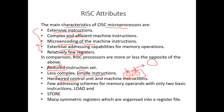RISC uses a hardware control unit, machine instructions with few addressing schemes for memory operands, with only two basic instructions for memory access: load and store. It also has many symmetric registers organized into a register file. These are the basic attributes of a RISC processor.